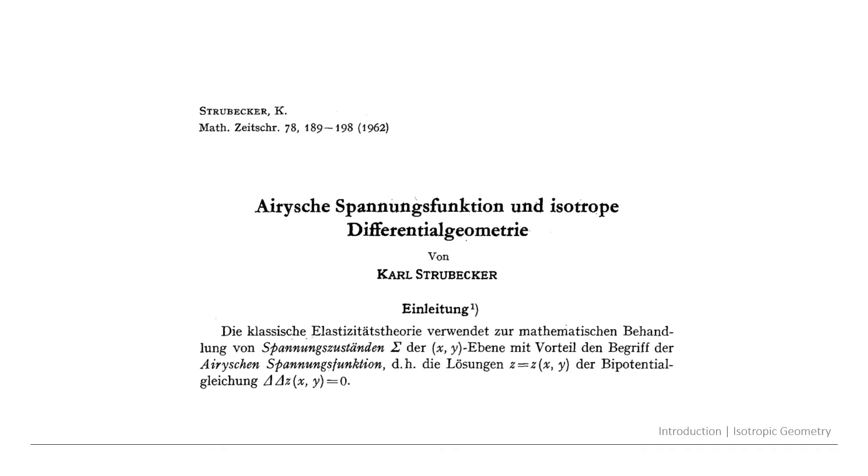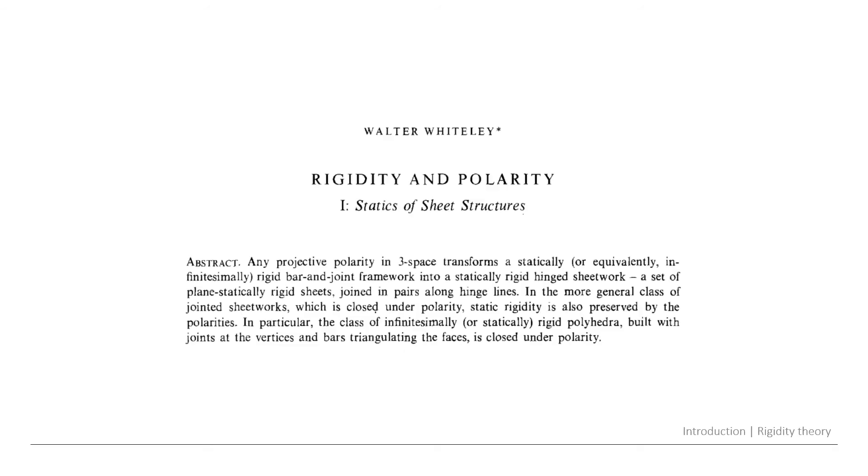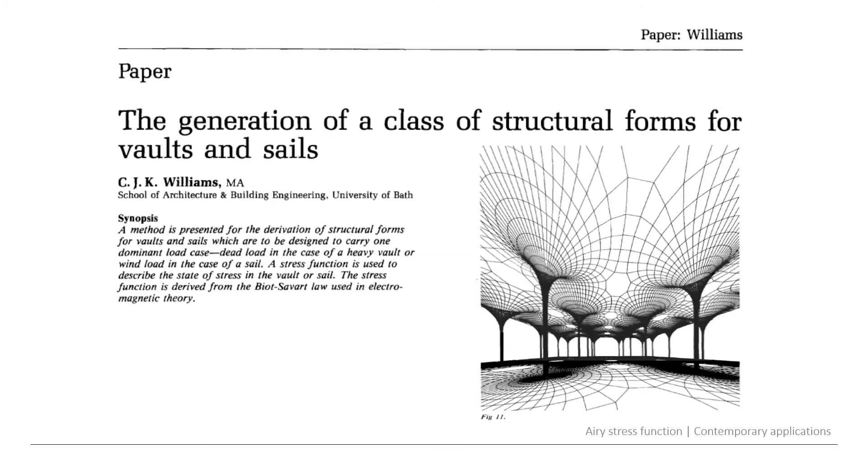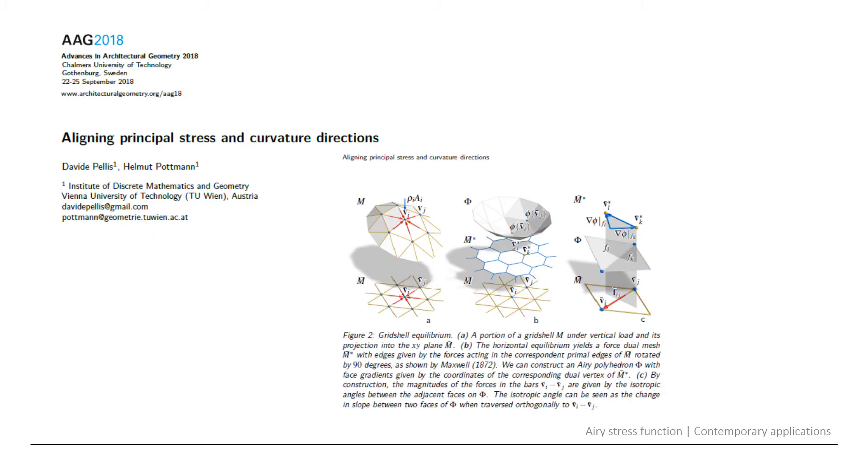These ideas existed during the 19th century and during the 20th century they were further developed by various researchers. One example is isotropic geometry by Strubecker. Another example is in the context of rigidity theory from the topology group in Canada by Walter Whiteley. Another example is the use of the Airy stress function for the generation of structural forms such as vaults and shells. And more recently the Airy stress function has also been used in the context of isotropic geometry for the optimization of quad grid shells.